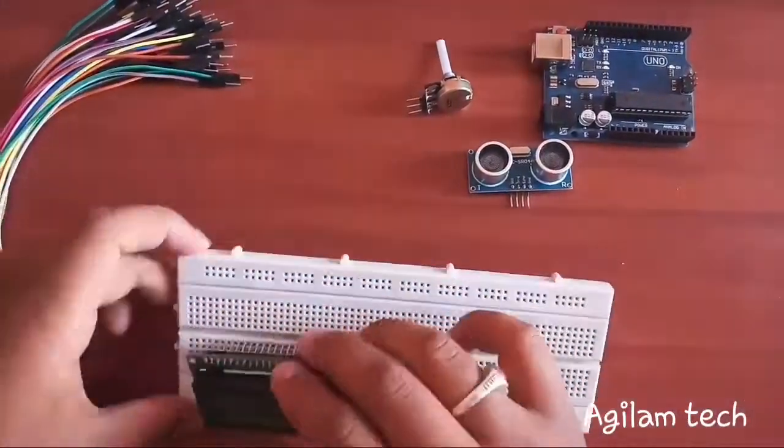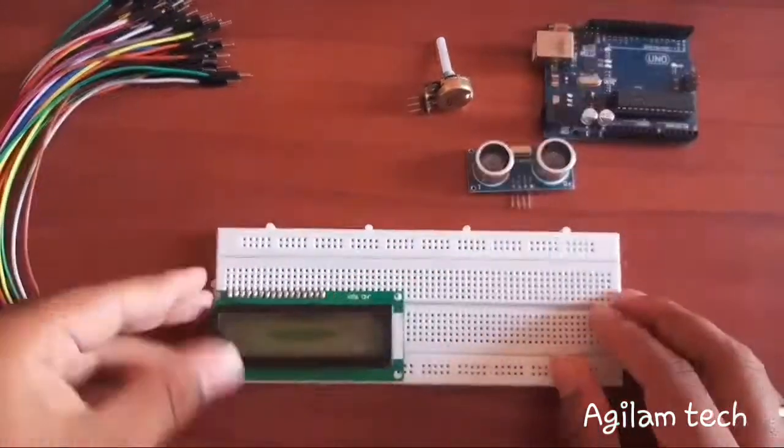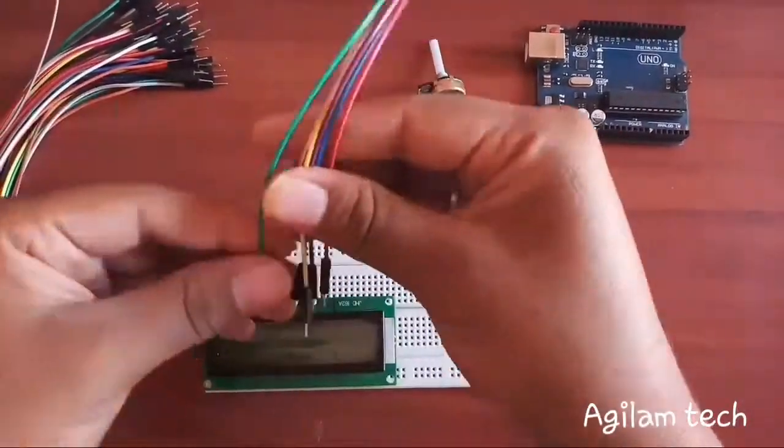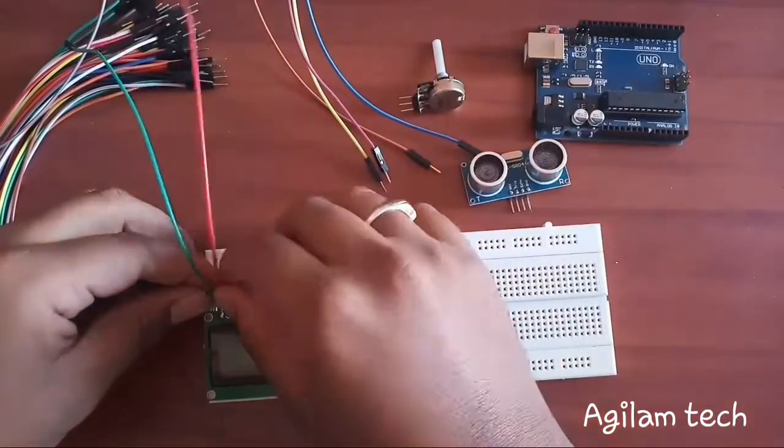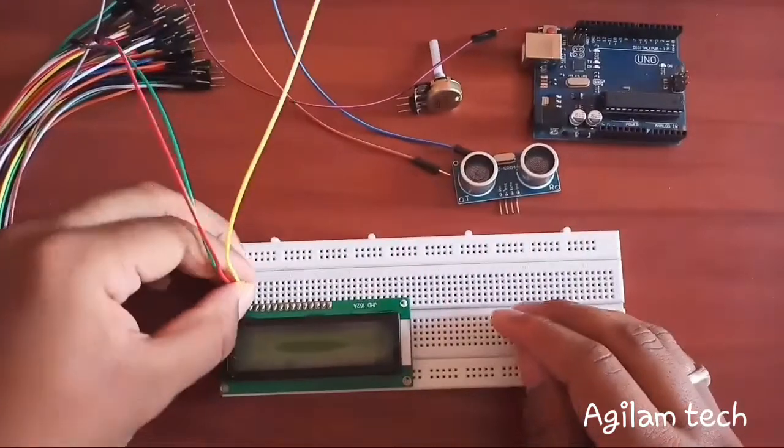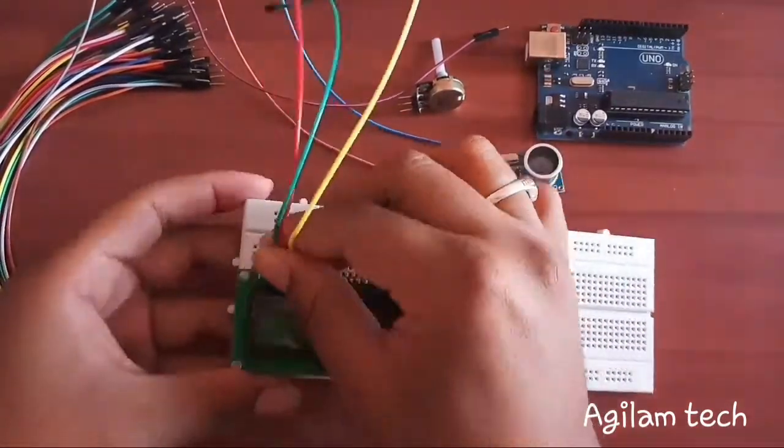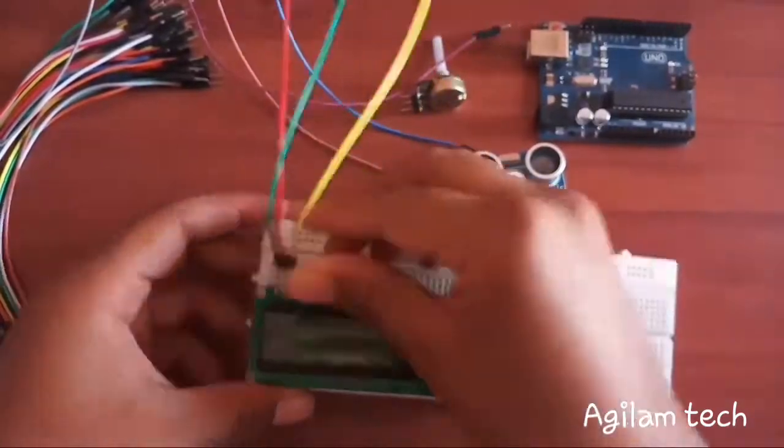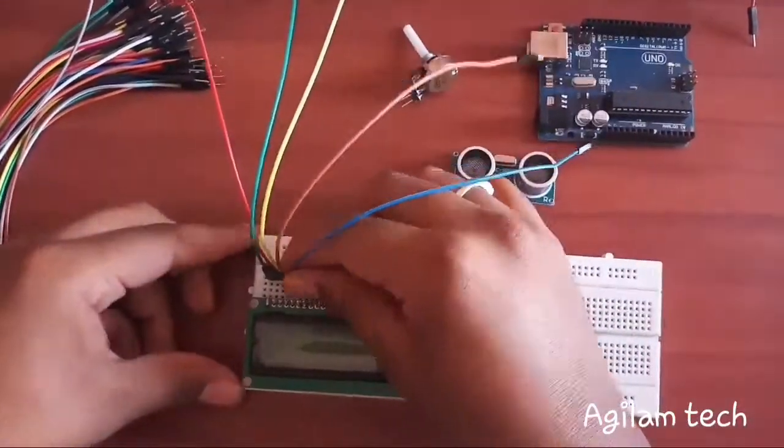Let's build the circuit. I am fixing the LCD display to breadboard. Okay, I am connecting pin number one and pin number two, pin number three. Sometimes this jumper wire... okay, well set. Pin number four, pin number five, and pin number six.